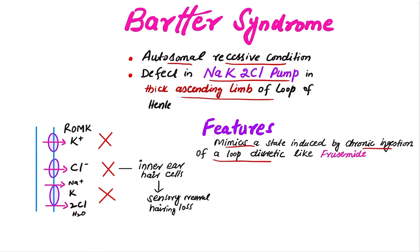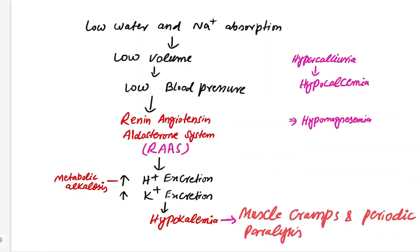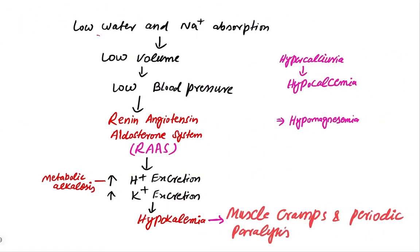Such as furosemide. This is the pump in the ascending limb of the loop of Henle. In Bartter syndrome, there is a defect in the sodium-potassium-2-chloride co-transport pump. The chloride ion channel is also affected, and the potassium ion channel is also affected. When there is low water and sodium absorption, there is a low body volume.